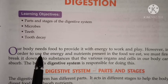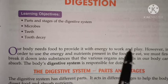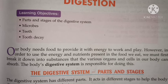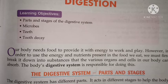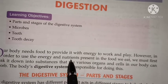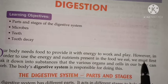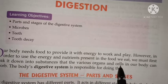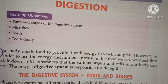Our body needs food to provide it with energy to work and play. However, in order to use the energy and nutrients present in the food we eat, we must first break it down into substances that the various organs and cells in our body can absorb.